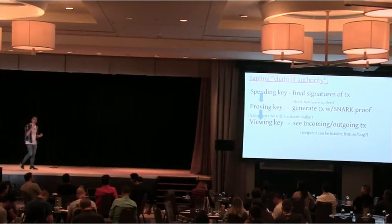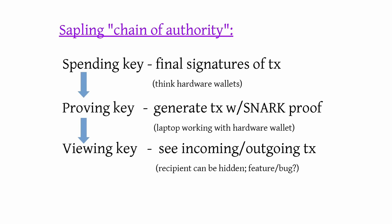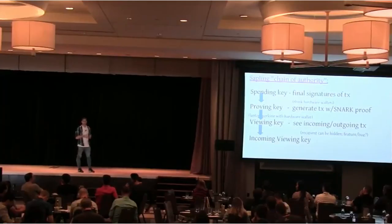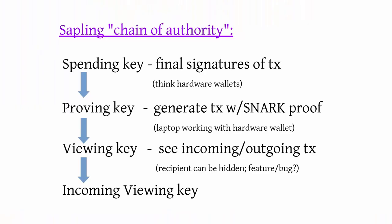From the proving key, you can derive a viewing key that lets you see both incoming and outgoing transactions. And also from this viewing key, you can go further and derive an incoming viewing key only to see incoming transactions.